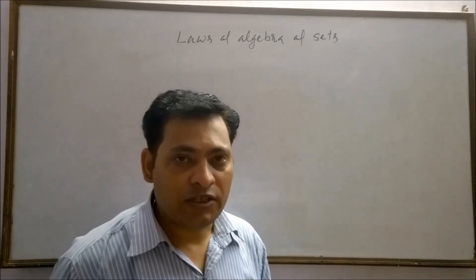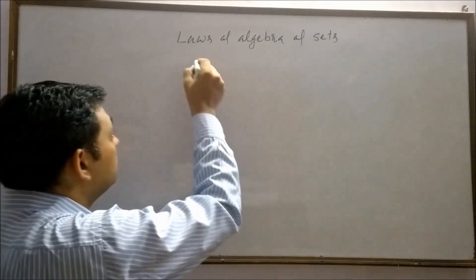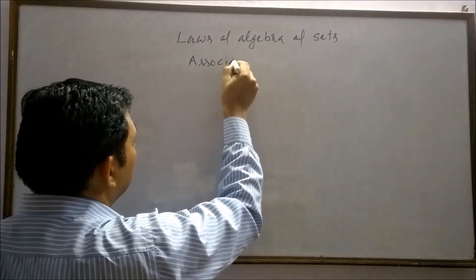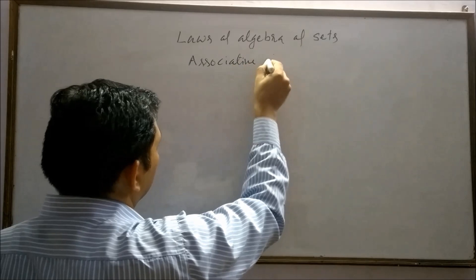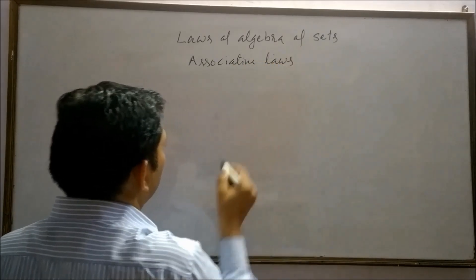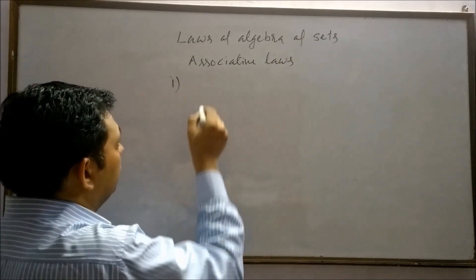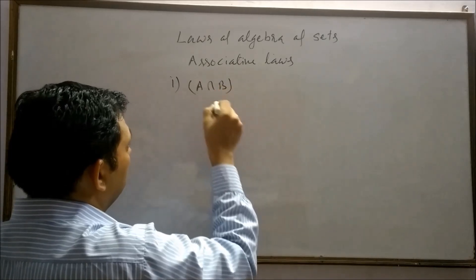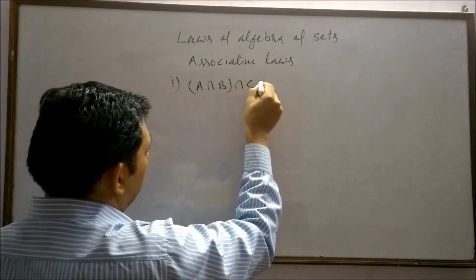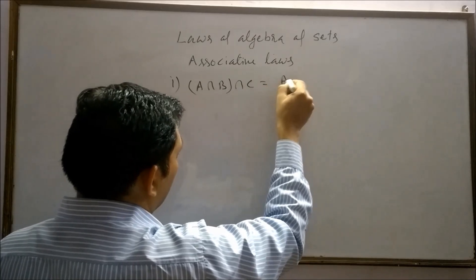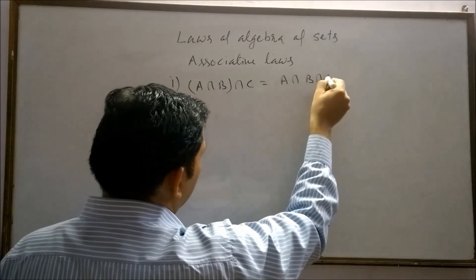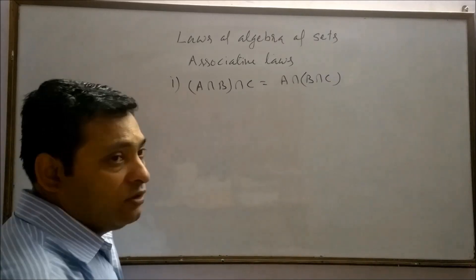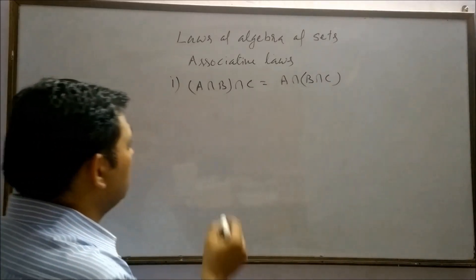Now I am going to discuss associative laws. A intersection B intersection C is equals to A intersection B intersection C. Let's try to understand it with example.